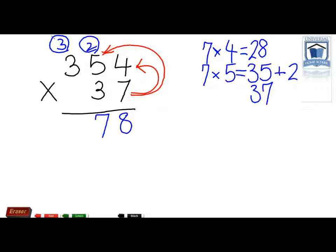Now it's 7 times 3. 7 times 3 equals 21. Don't forget about the 3 we carried over. That would be 24. 21 plus 3 equals 24.